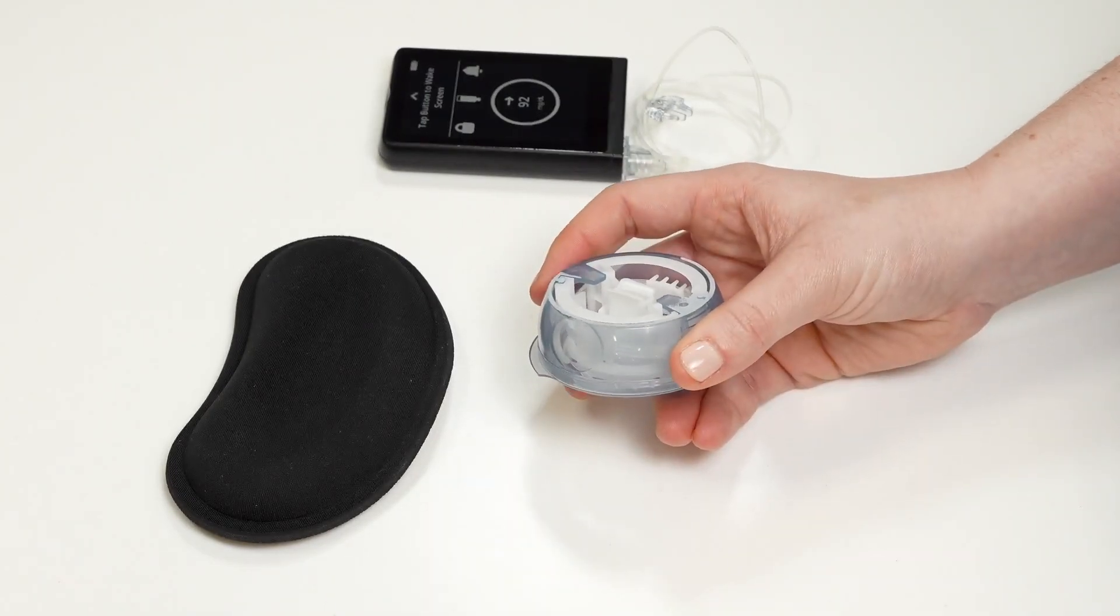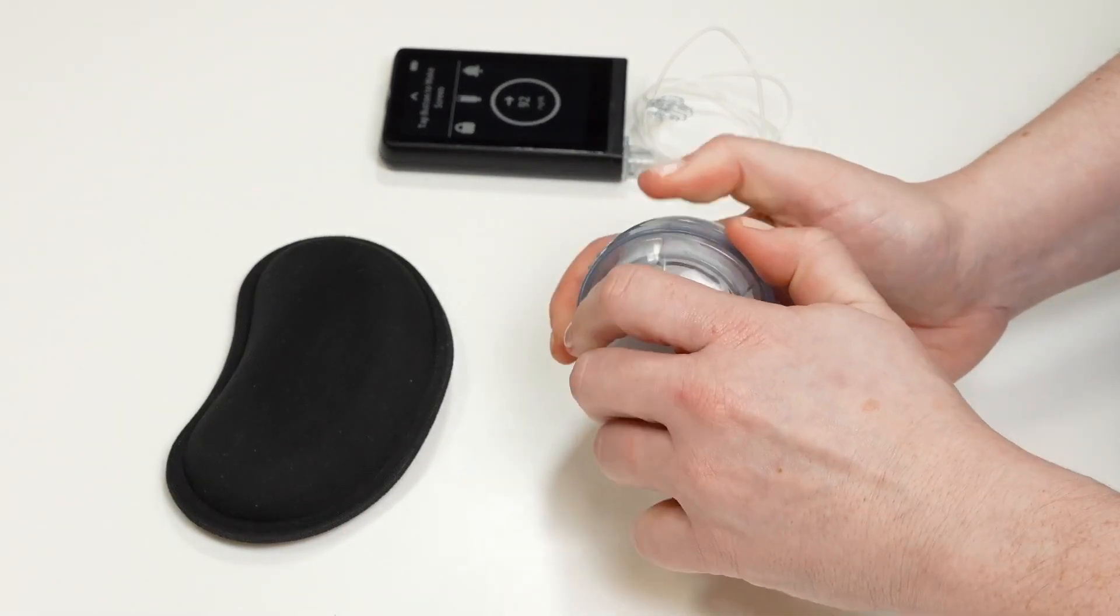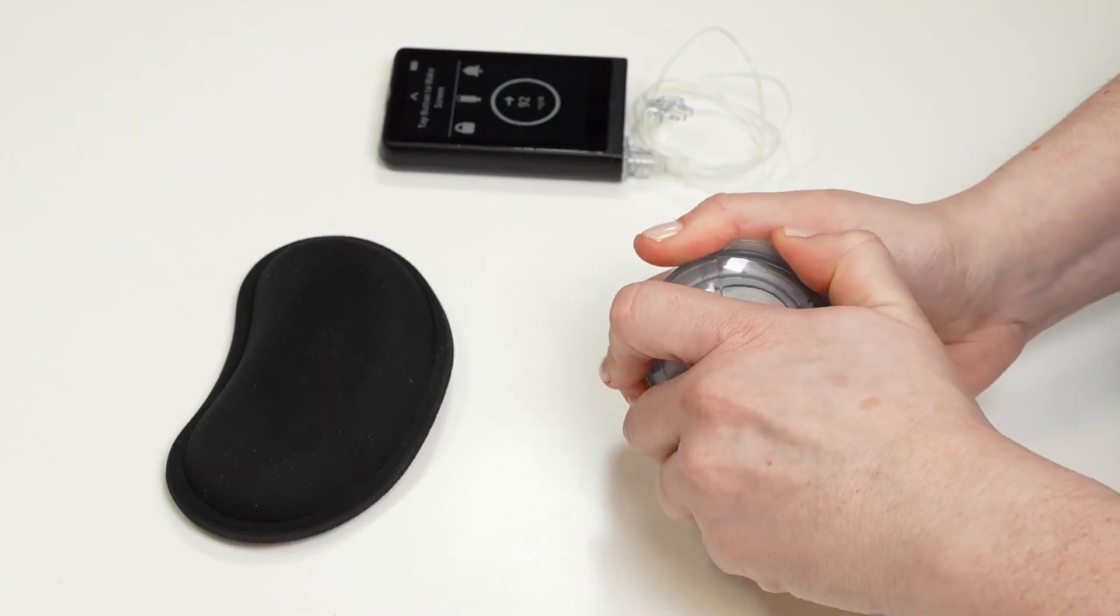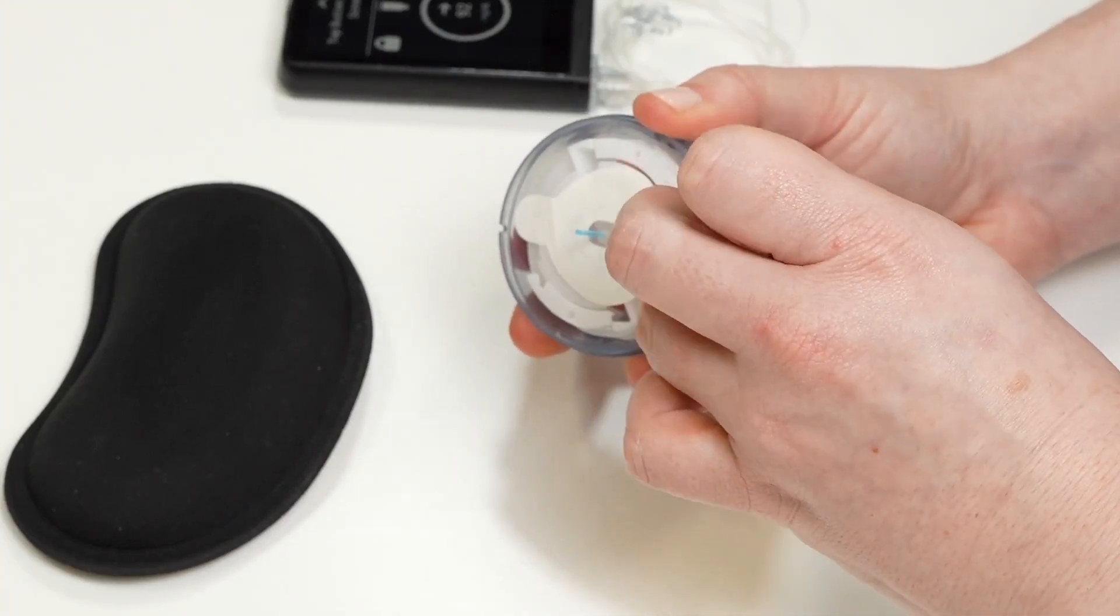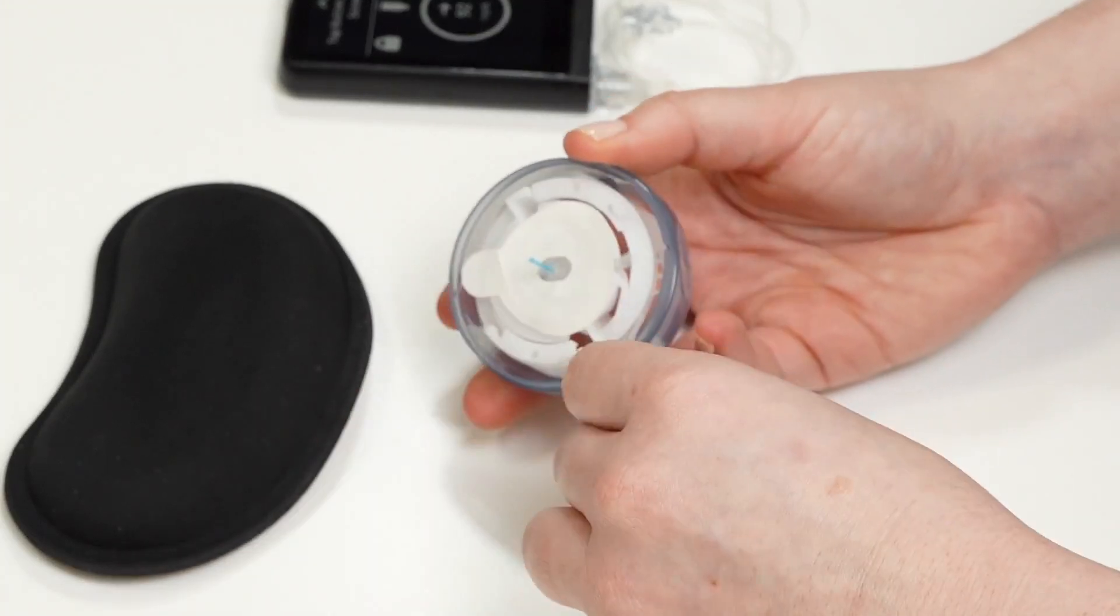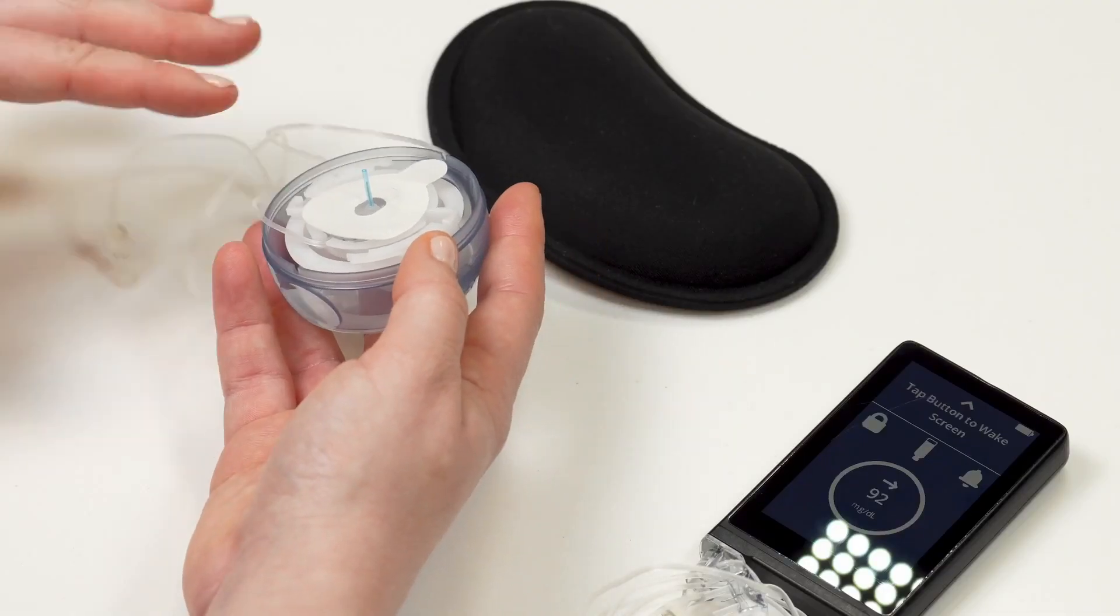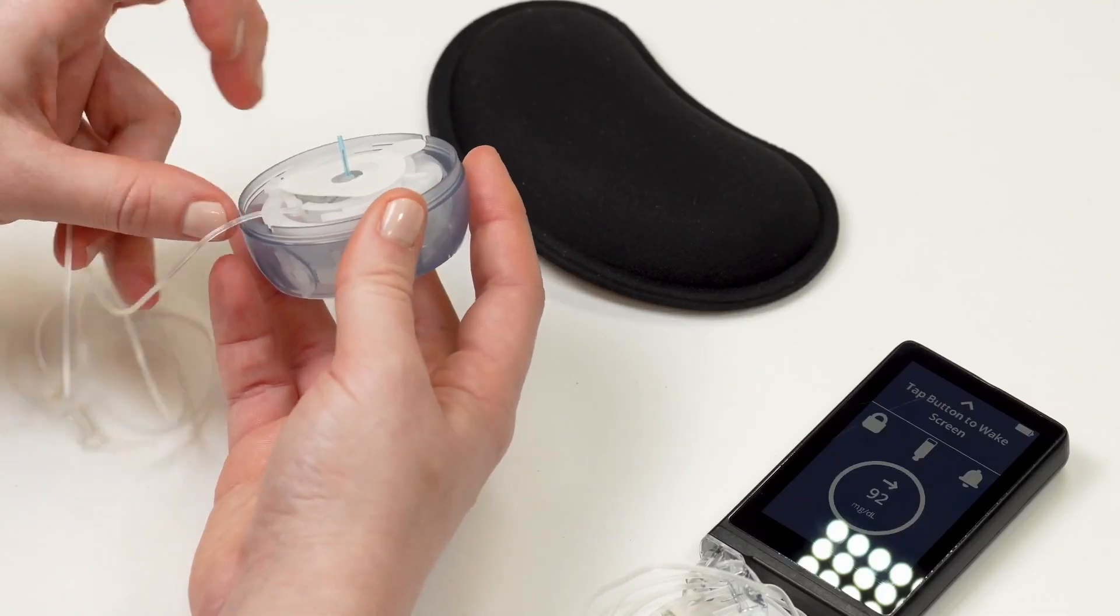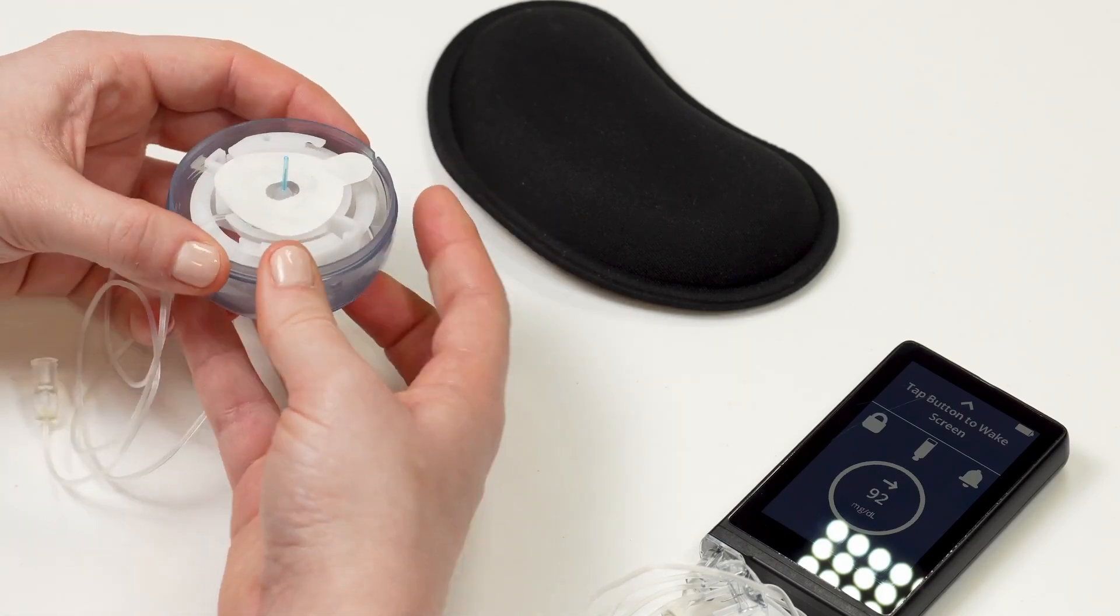Then, use the handle to pop open the top of the infusion set. Gently unhook the tubing and slowly unwrap it from the inserter. Carefully tuck the tubing out of the way using the small indents on the edge of the infusion set inserter.